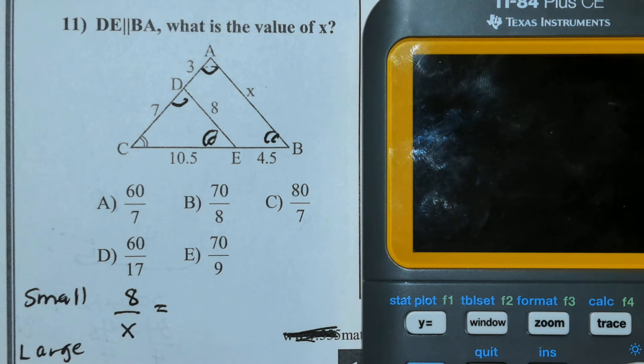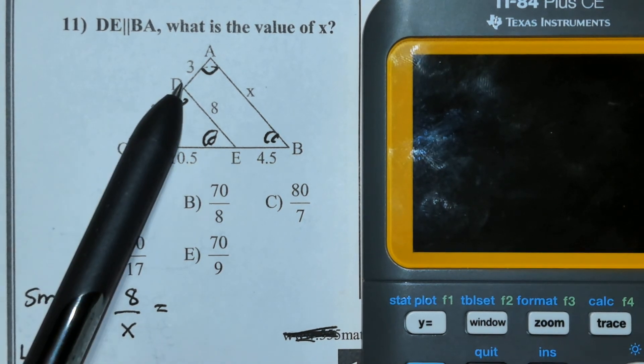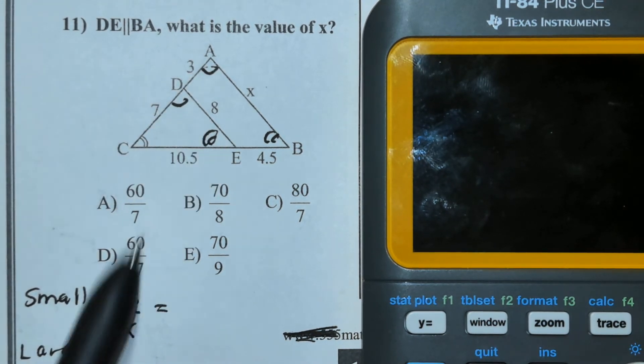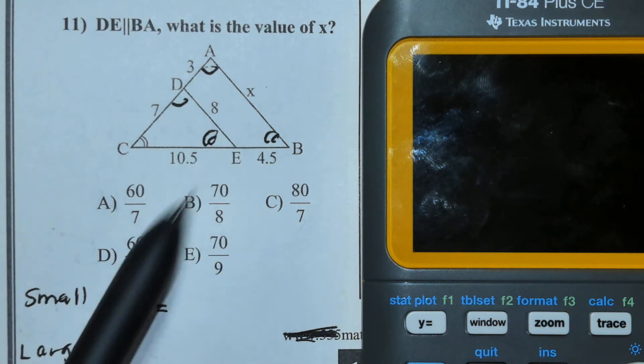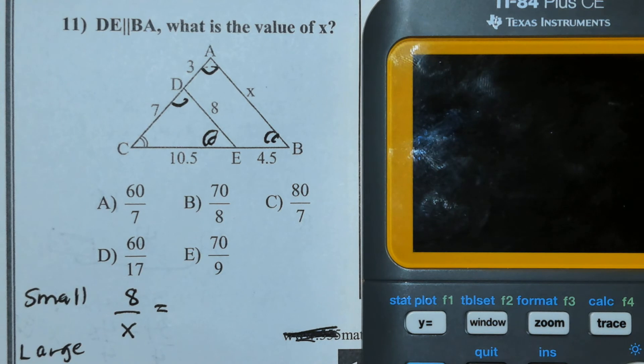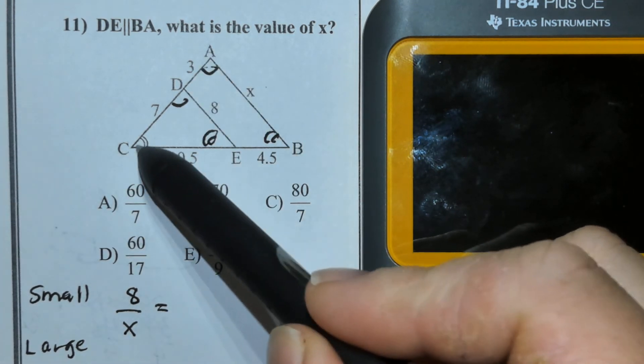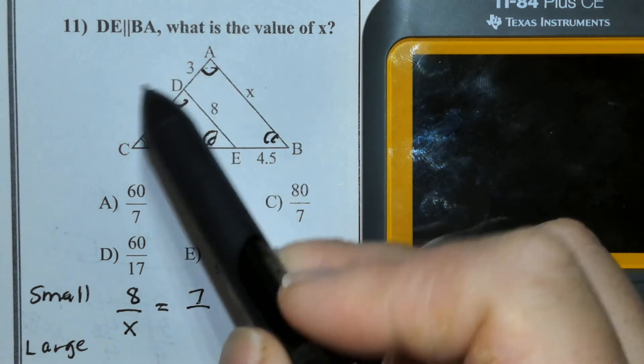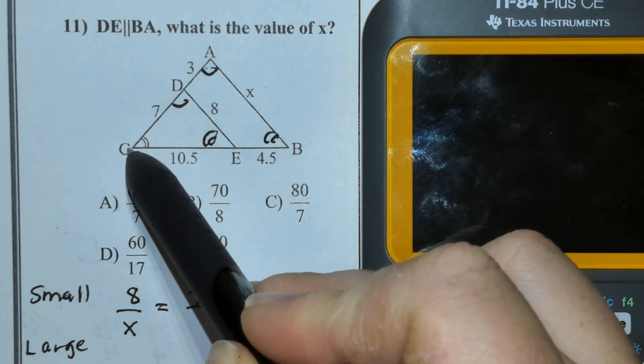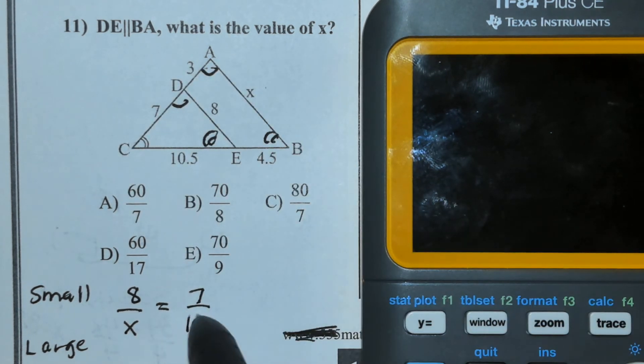In creating triangle ratios, I can see the smaller triangle has a right length of 8, and the larger triangle has a right length of X. Now, their left length, the smaller triangle has a left length of 7. The larger triangle has a left length of 7 plus 3, or 10.